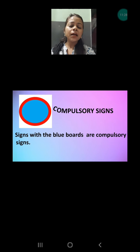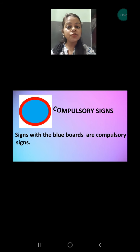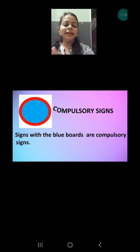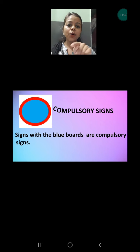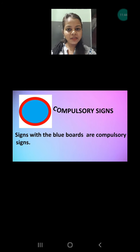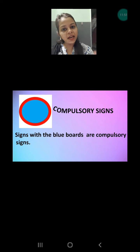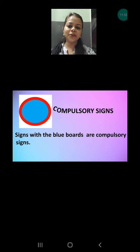Next is the compulsory sign. Before this we were talking about prohibited signs — things we are not allowed to do. Now we are talking about compulsory signs — things we are bound to do, things we must follow. Whatever is shown on the board, you have to do it. This is the difference between compulsory signs and prohibited signs.